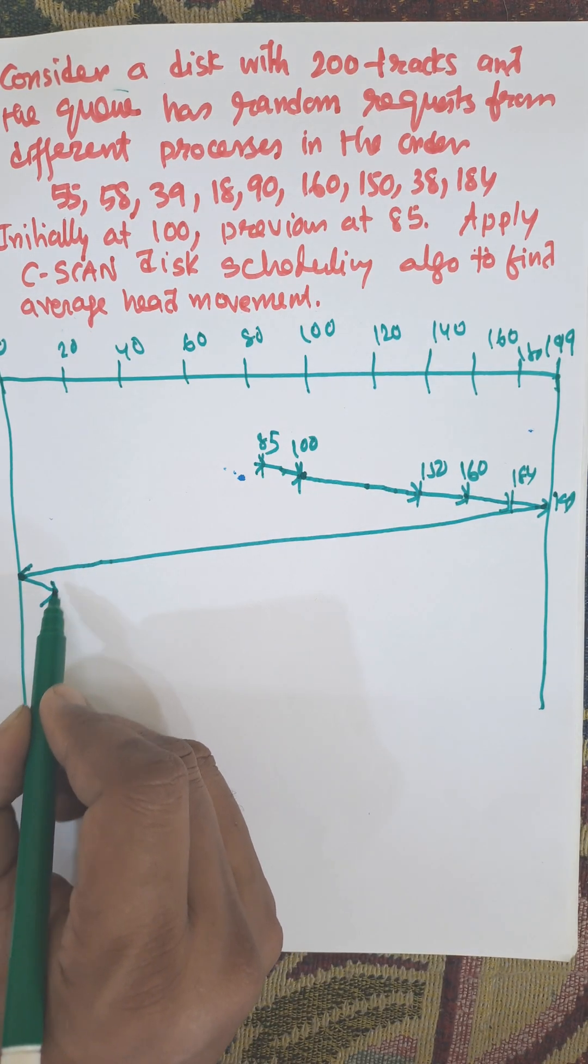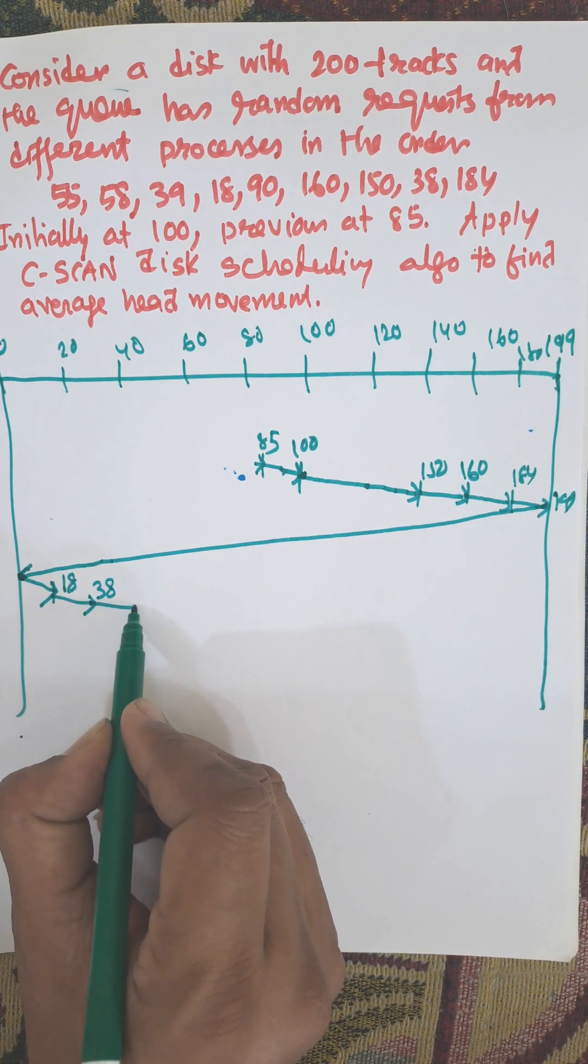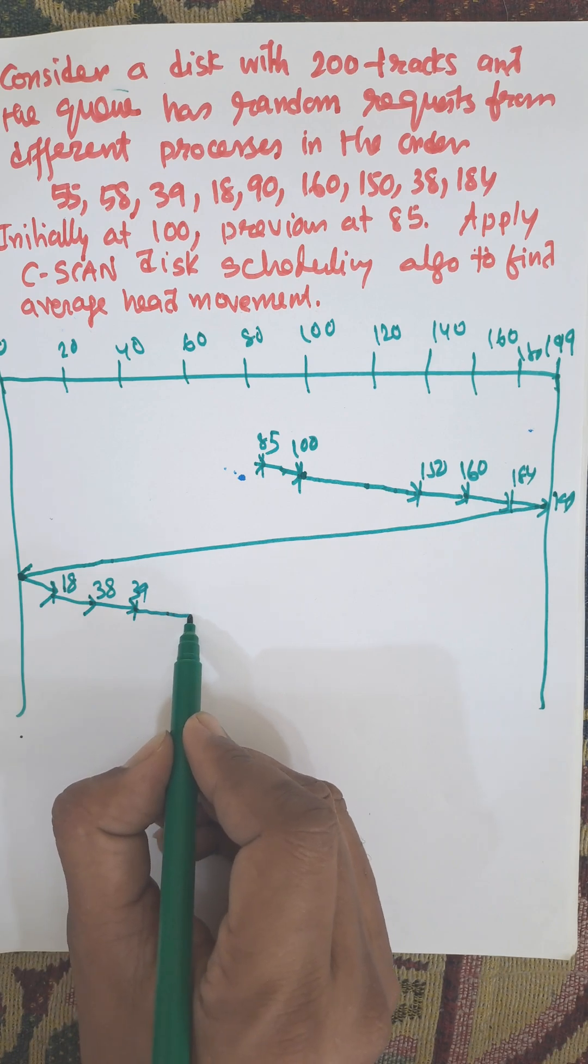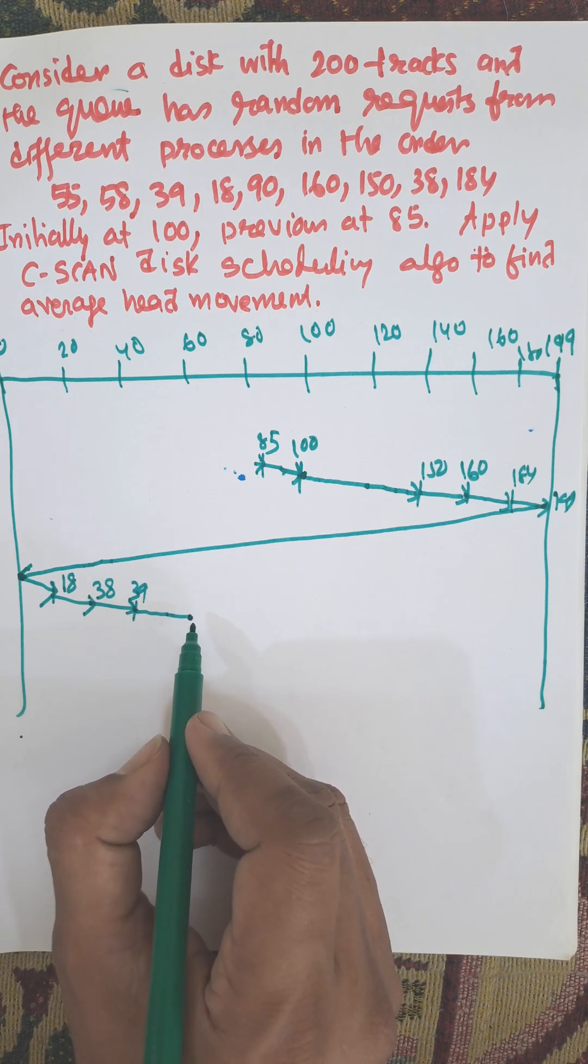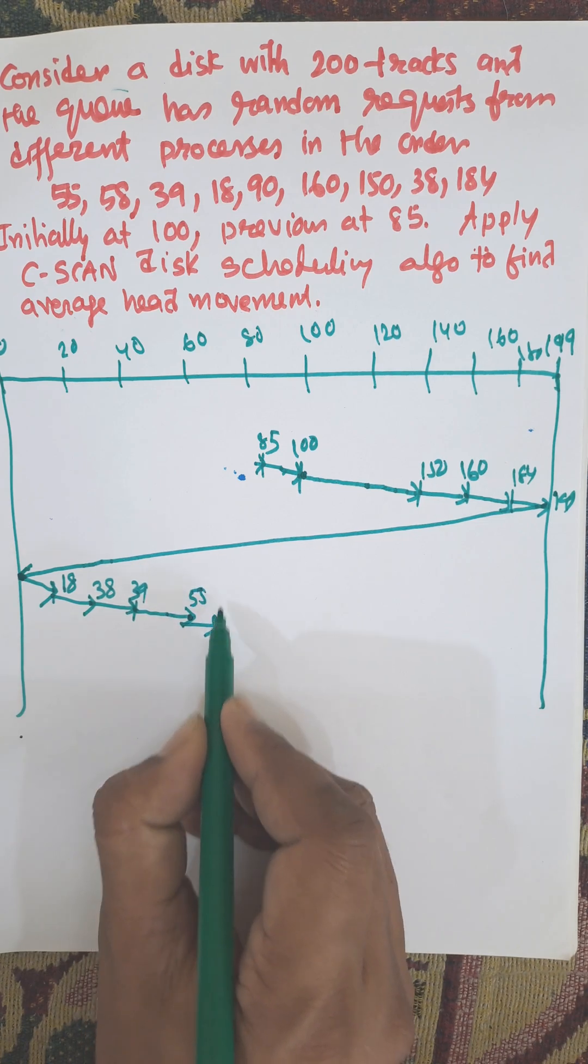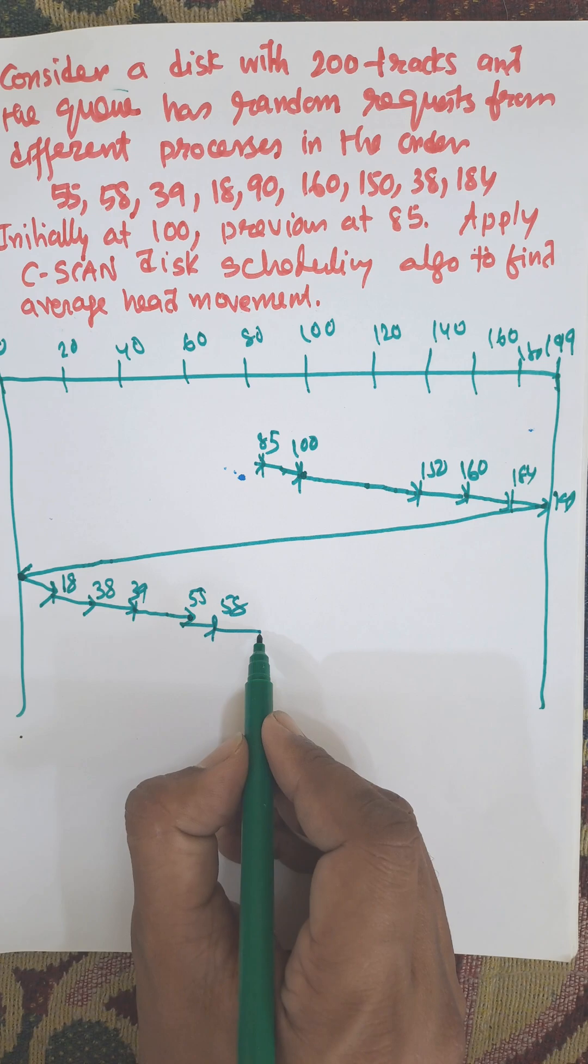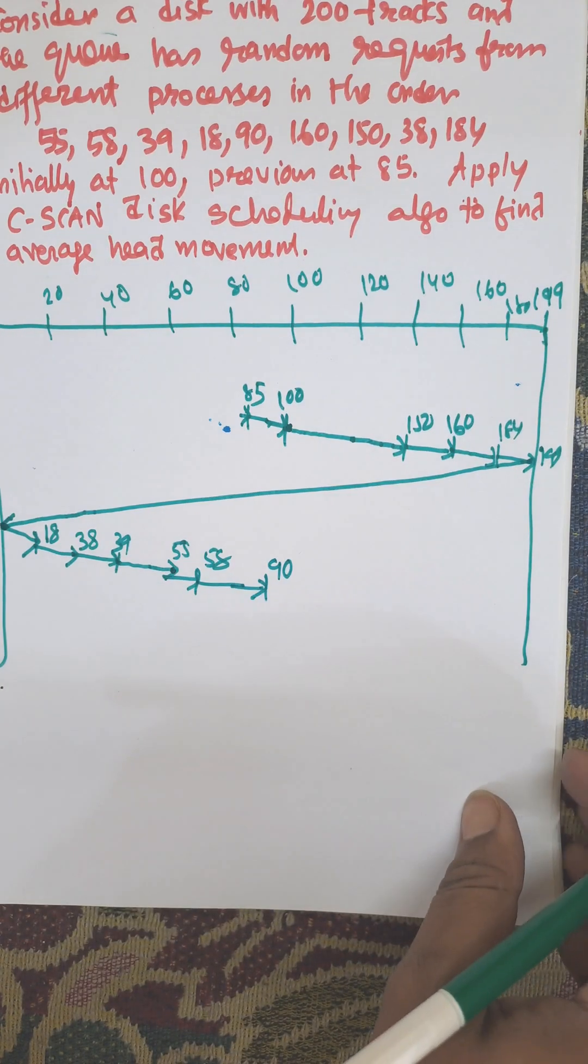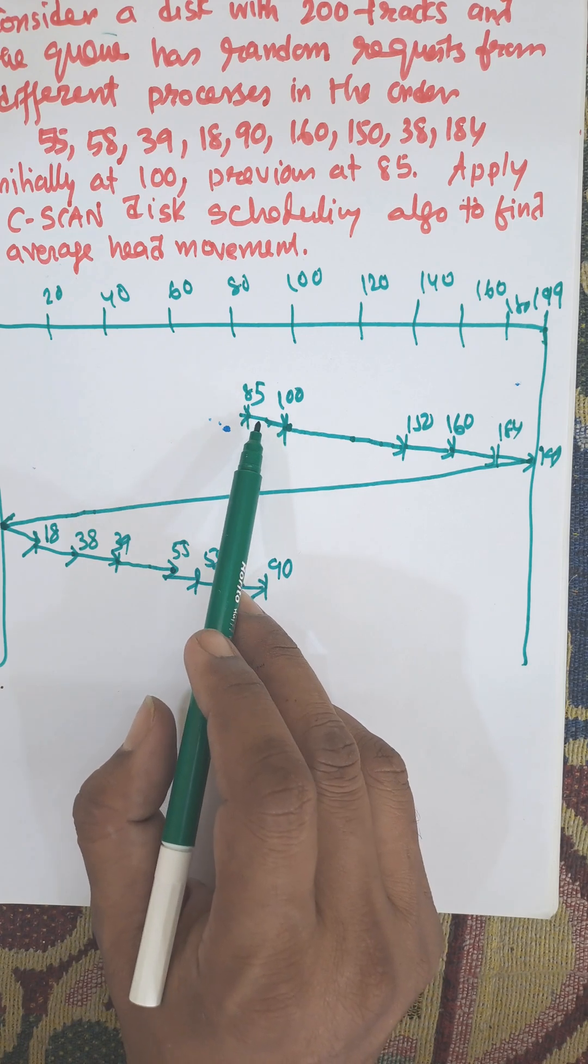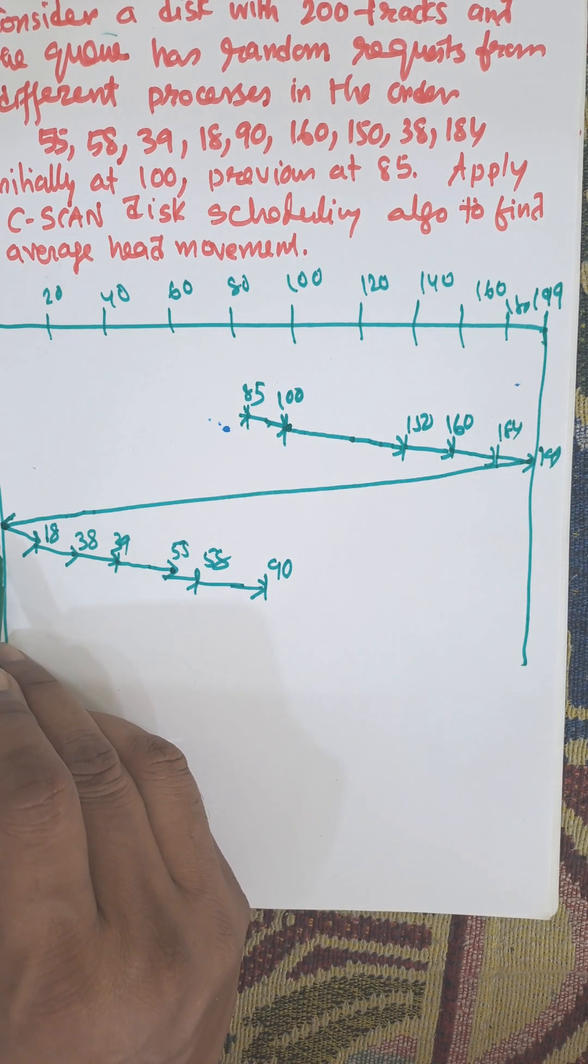It will visit 18, then 38, then 39, then 55, then 58, then 90. This is the last, 90. So this is known as C-SCAN, like circular scan. First time initially it moves toward the right forward direction, then again after rotating it will move to the forward direction.